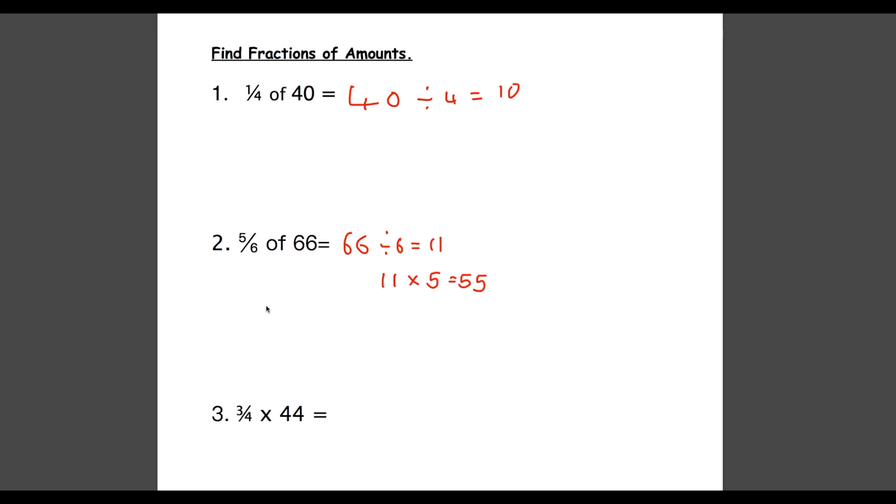On a side note, you will have noticed that in this case we have a fraction of 40 and a fraction of 66. Well this bottom number here is 3 quarters multiplied by 44. Don't let that catch you out because multiplying a fraction by a number is the same as finding a fraction of a number. It's just something that the examiners put in there to try and catch you out.